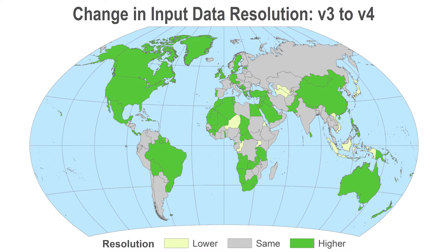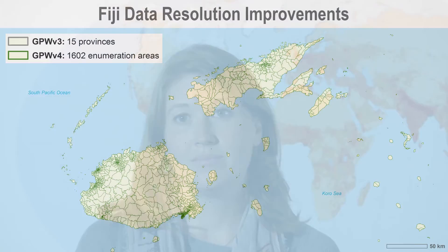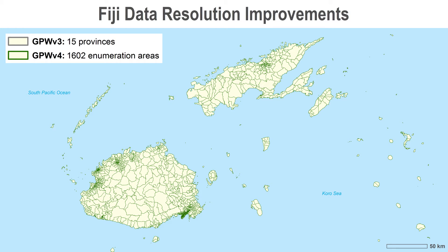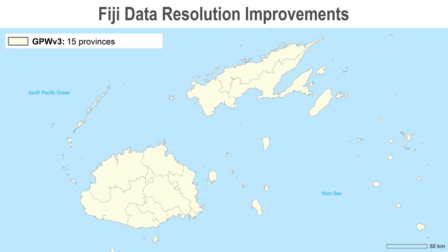GPW-4 includes many more input administrative units, greatly improving the accuracy of our population estimates. Technological advancements are a key factor in these improvements. In recent years, national statistics offices around the world have made more of their census data available online and easily downloadable. As a result, we have higher resolution data for more than 100 countries. In particular, resolution has been improved for a number of small island states, which are especially vulnerable to climate change and rising sea level. Knowing the coastal population distribution of these islands is therefore highly relevant. For example, Fiji now has over 1,600 input enumeration areas, compared to only 15 provinces in the previous versions of GPW.